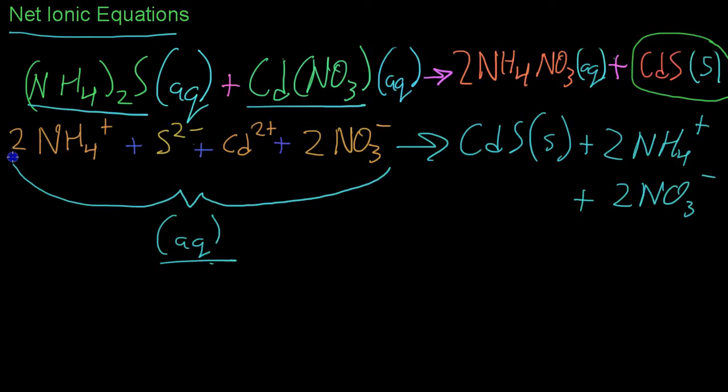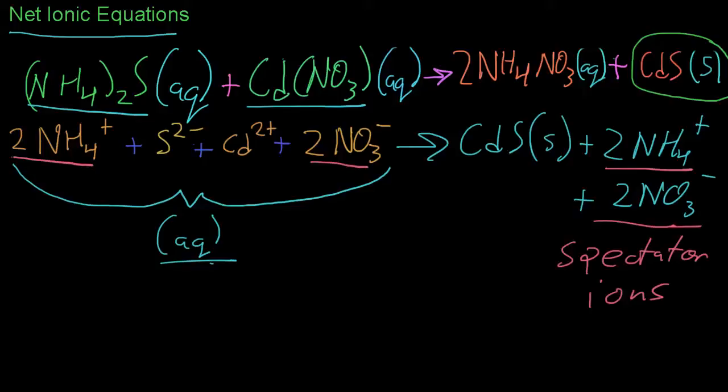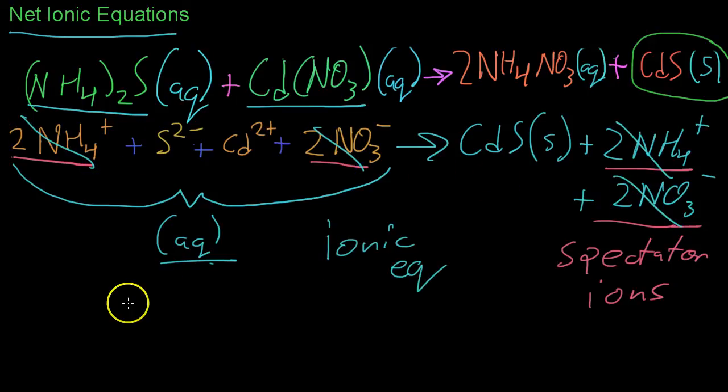Now you'll notice you end up with the same formula for ammonium and nitrate on either side, and this is because these really don't take part in the reaction. These are what are known as spectator ions. That is, they are in the solution, however, they don't take part in forming the precipitate or actually reacting. Rather, they remain dissolved as part of the aqueous solution the whole time while the cadmium and sulfur do the actual reaction. Now, because you have these spectator ions on either side not really doing anything in this ionic equation, what you can do is sort of cancel them out.